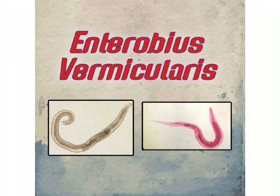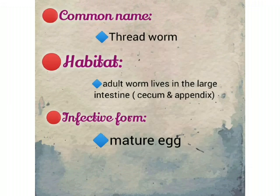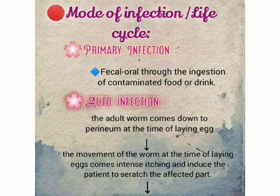Next, Enterobius vermicularis. Common name: threadworm. Habitat: the adult worm lives in the large intestine. Infective form: mature egg. Mode of infection: there are three types — primary infection, auto-infection, and retro-infection. In primary infection, transmission is fecal-oral through ingestion of contaminated food and drink.